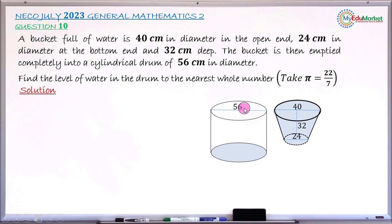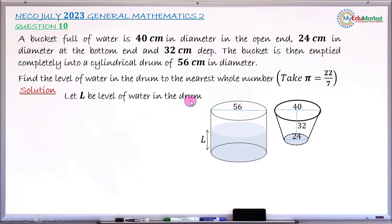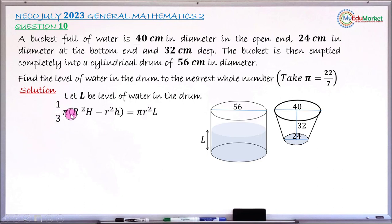The drum is 56 cm in diameter, and we are asked to find the level of the water. Let that level of water be L — capital letter L — the level of the water in this drum. We use the concept that the quantity of water in the bucket initially is the same quantity that will be inside the cylindrical drum to level L. Now write the formula for finding the volume of the frustum of a cone: 1/3 × pi × (R² × H − r² × h).